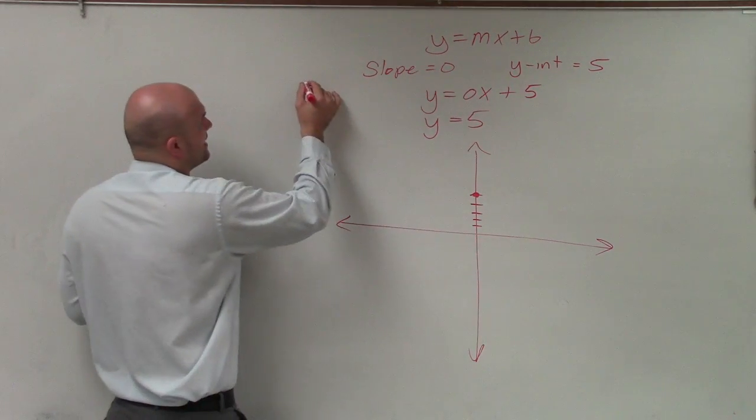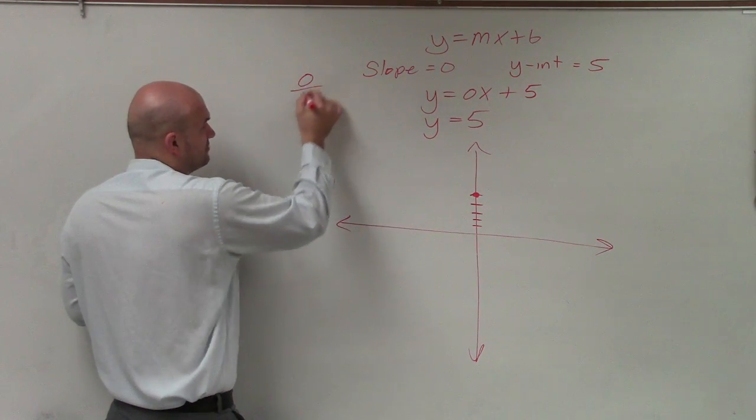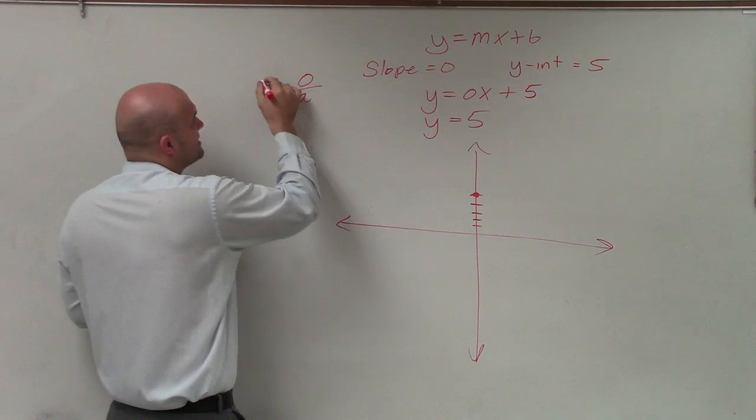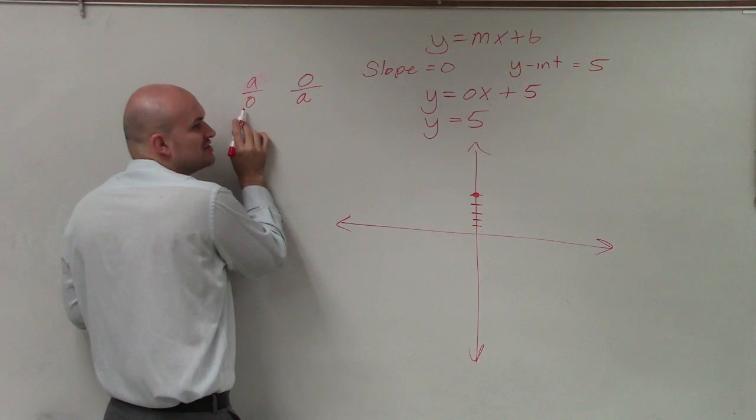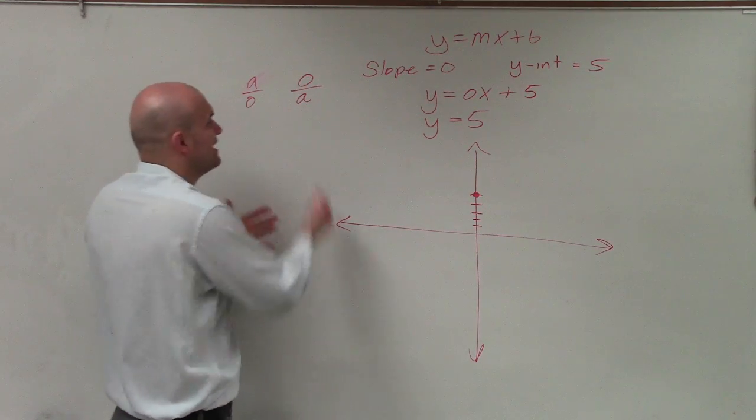If you're thinking about this, if it's 0, it has to be 0 over a, not a over 0. You can't have the change in x being 0, because it's not undefined—it's just 0.